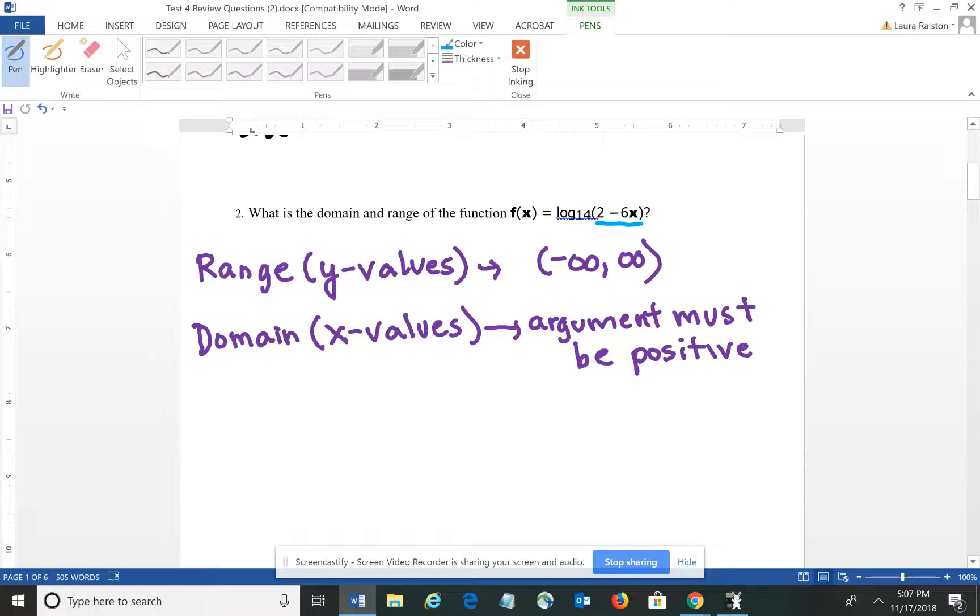So in this scenario, we need 2 minus 6X to be positive or greater than 0. And so I have a basic inequality equation there that I can solve for X. I'm going to subtract 2 from either side so that I have negative 6X is greater than negative 2.